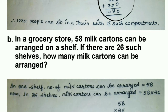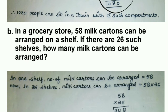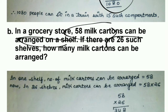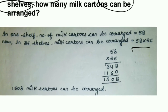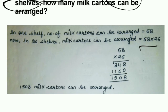In a grocery store, 58 milk cartons can be arranged on one shelf. If there are 26 such shelves, how many milk cartons can be arranged? In one shelf there are 58. For 26 shelves: 58 times 26 equals 1508. So 1508 milk cartons can be arranged.